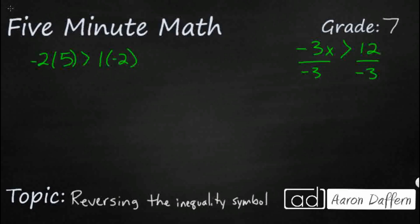And look at what happens. So negative 2 times 5. Well, 2 times 5 is 10. Positive and negative gets you a negative. And then we've got 1 times 2 is 2. So positive and negative is negative 2. So it looks like negative 10 is now greater than negative 2. And that's actually not correct.